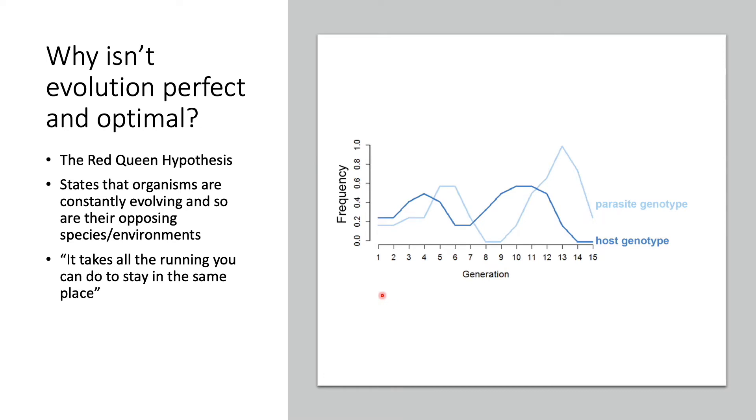If we start at the first few generations, we see that the host starts at some level of fitness and it evolves to a better fitness as we can see by its frequency increasing. But we also see that as the host frequency increases, so does the frequency for the parasite. Eventually the parasite increases and gets better in terms of fitness, and the host can't necessarily keep up and is getting out-competed, so the host frequency begins to dip down.